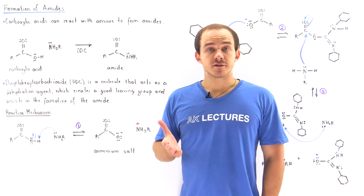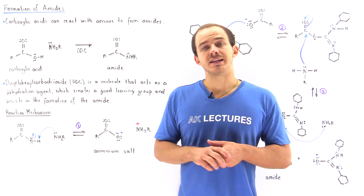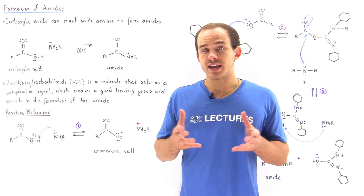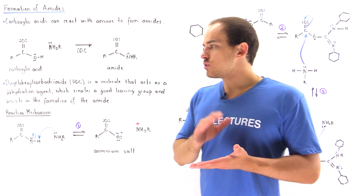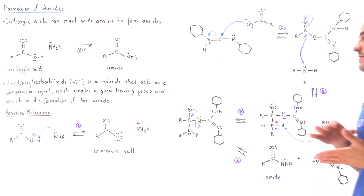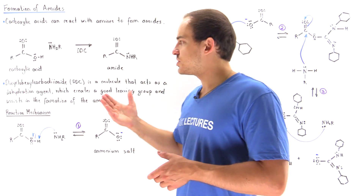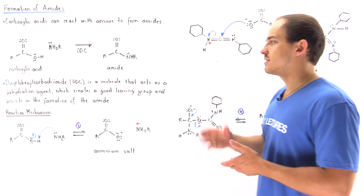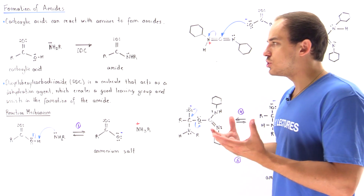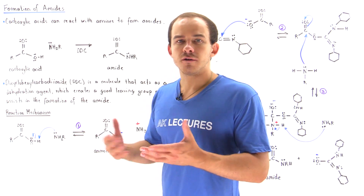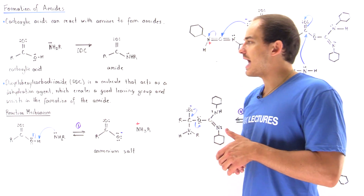Carboxylic acids can be transformed into amides if we mix our carboxylic acid in the presence of a dehydrating agent such as DCC, as well as an amine. This reaction is basically a 5-step mechanism. DCC, which stands for Dicyclohexylcarbodiimide, acts as a dehydrating agent and creates a good enough leaving group for the final amide product to actually form.